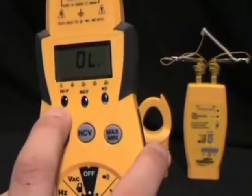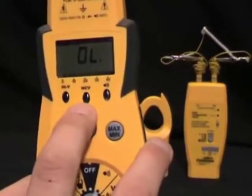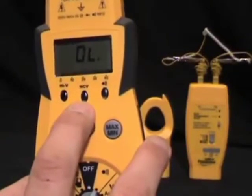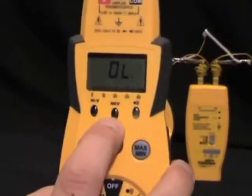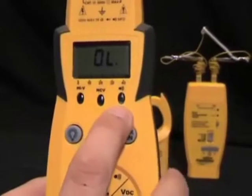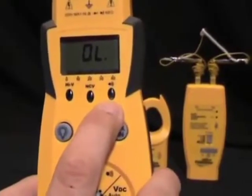We have the non-contact voltage LED that will beep and light up when you're using the non-contact voltage feature of the meter. And we have the continuity LED that will beep and light up when you are testing for continuity.